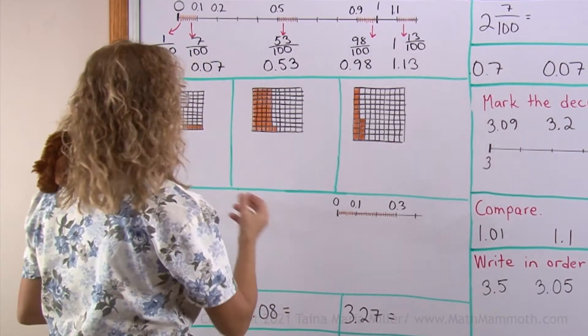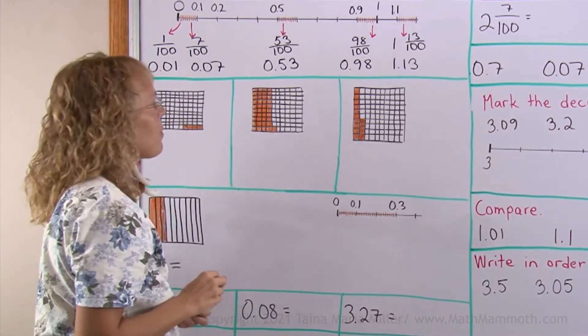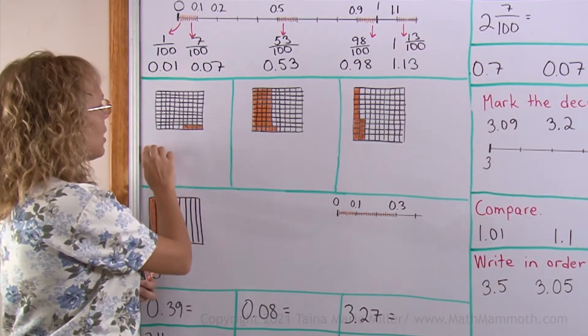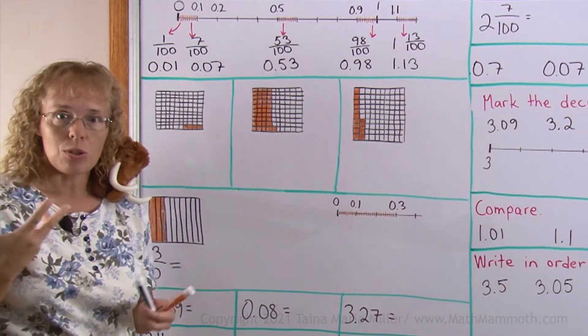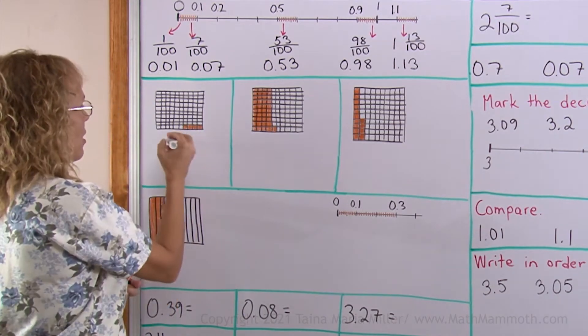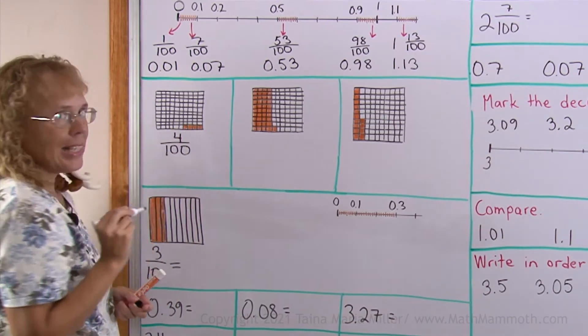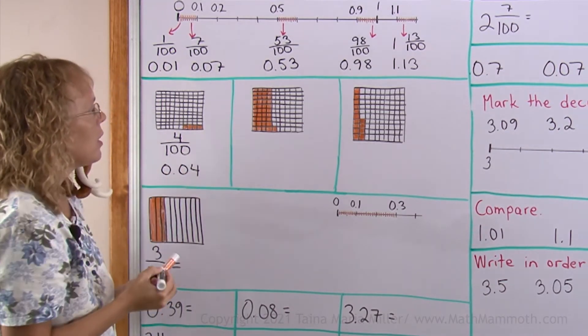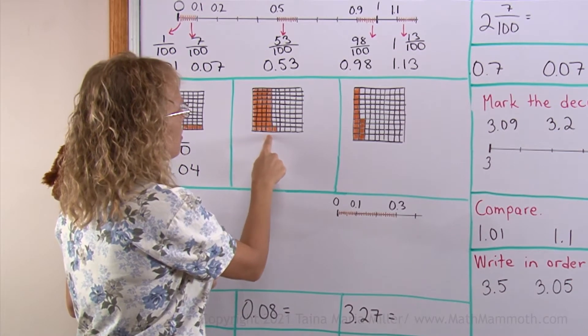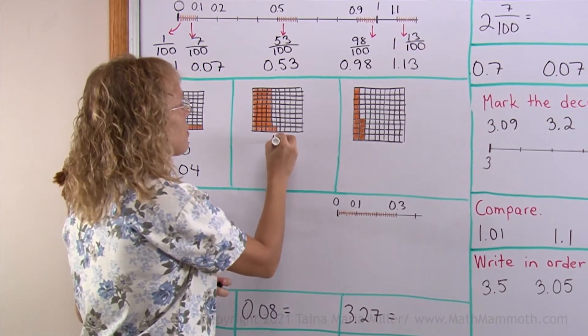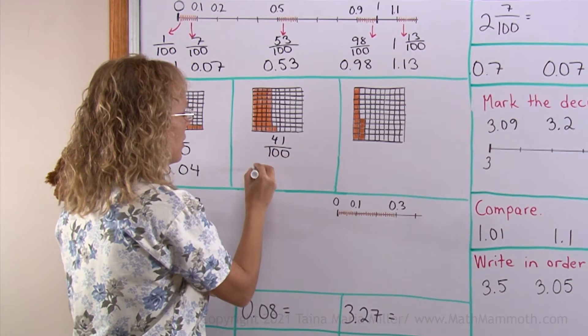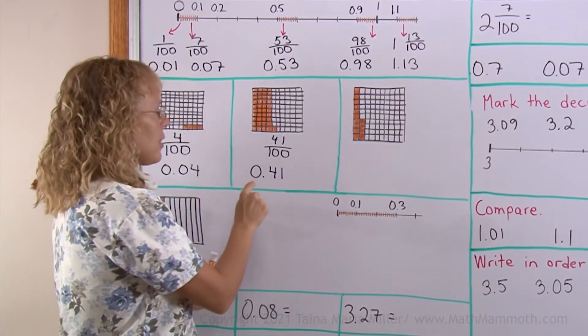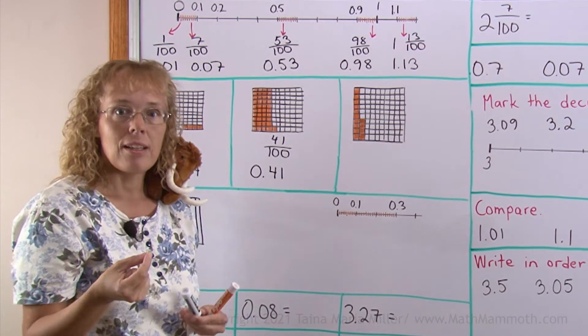Now let's look at hundredths also in these visual models. And of course, students are used to writing fractions out of these. So let's do that. This whole thing is divided into 100 parts and 4 are colored, so it is 4 hundredths. As a decimal now 0.04. Here we have 40 and 1. 41 hundredths. As a decimal 0.41. We read this either as 0.41 or as 41 hundredths.